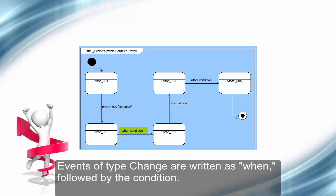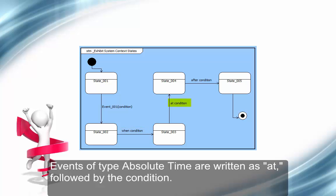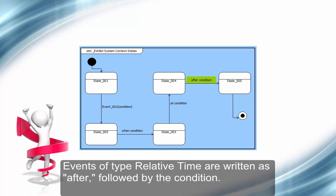Events of type change are written as when, followed by the condition. Events of type absolute time are written as at, followed by the condition. Events of type relative time are written as after, followed by the condition.